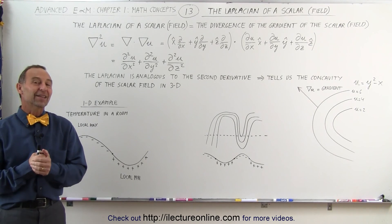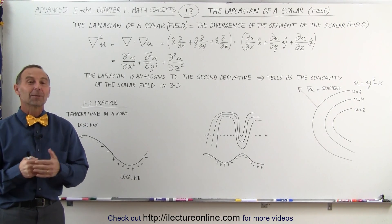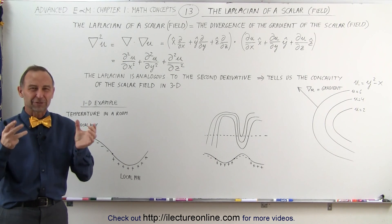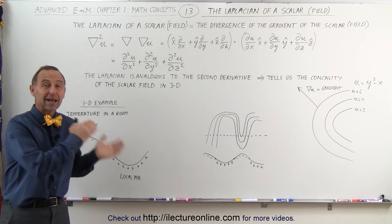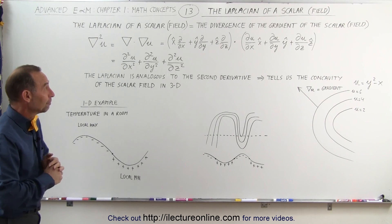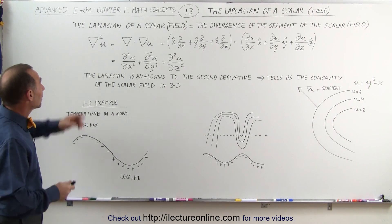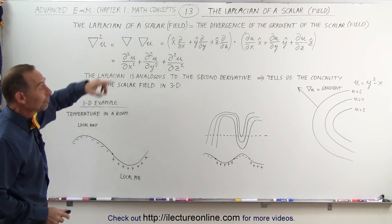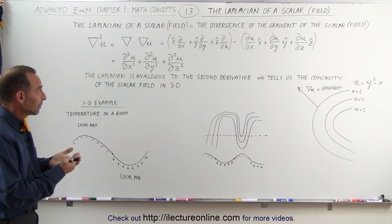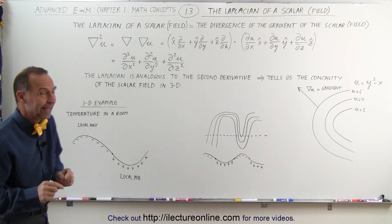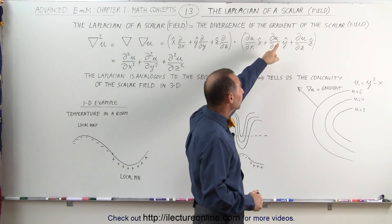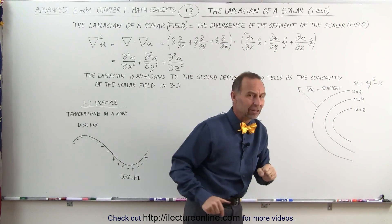Welcome to Electron Line. Now let's talk about the Laplacian — it's one of those concepts that is very difficult to understand, so if we give a good example of it, we'll do a lot better. Mathematically, the Laplacian of a scalar field is equal to the divergence of the gradient of that scalar field.